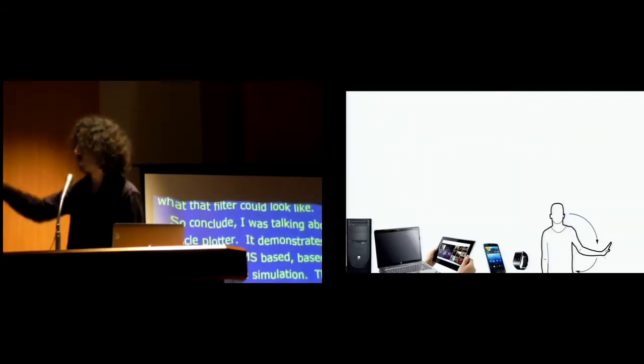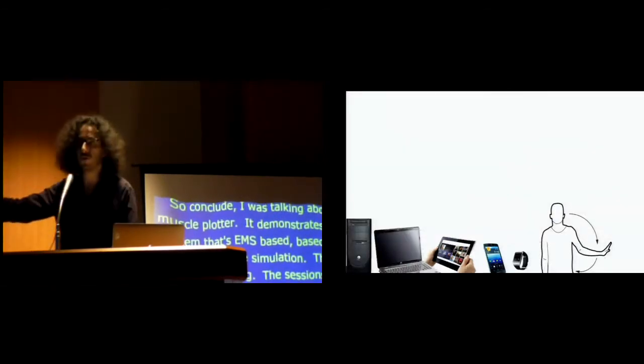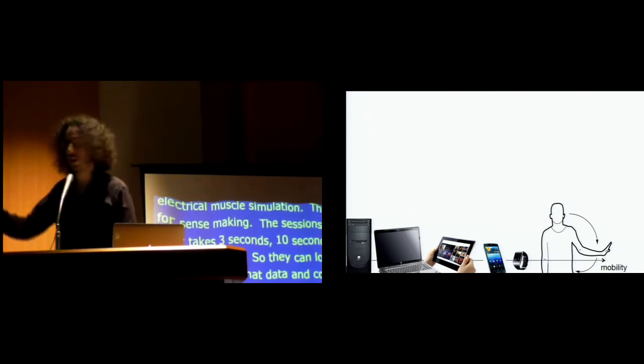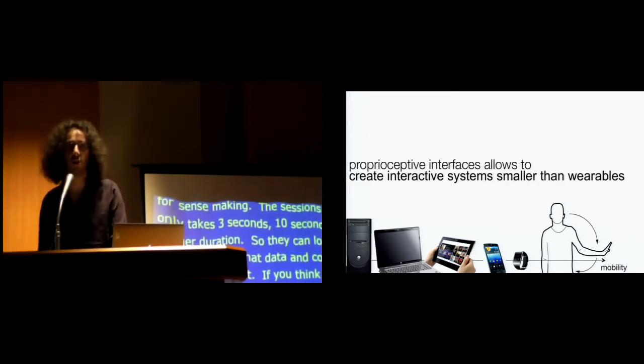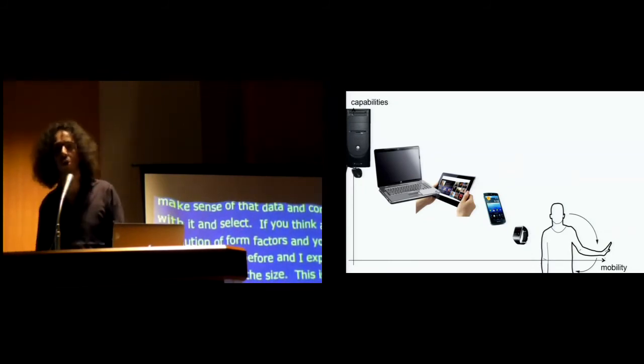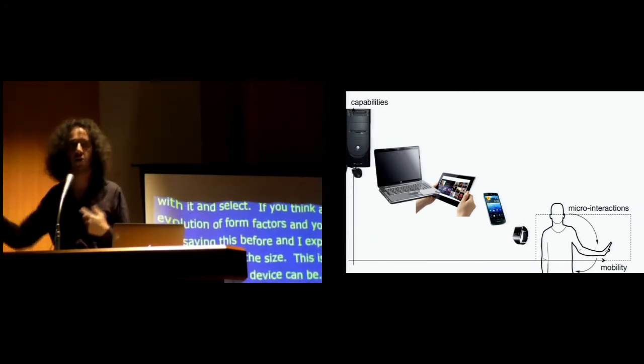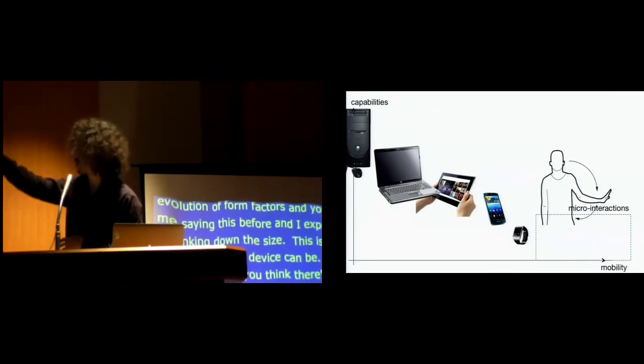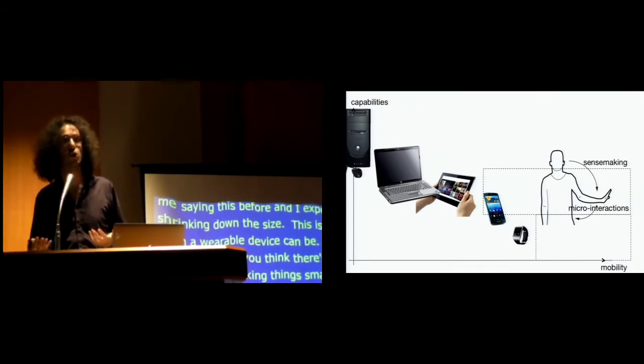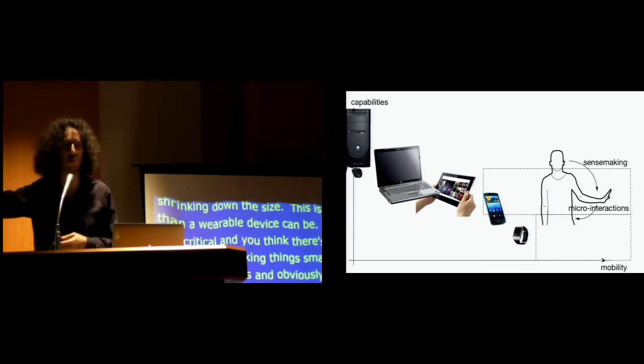This is a very simple RC circuit, and what we get out is a sort of very interactive tryout of how that filter could look like. All right, so to conclude, I was talking today about Muscle Plotter. It demonstrates a system that is EMS-based, so based on electrical muscle simulation. But the key feature here is that this system allows for sense making. The sessions here don't take 3 seconds, 10 seconds. They take longer durations because the trace of the output is persistent using a pen, so the user can look and make sense of that data and can play with it, can select it, can do a bunch of things. If you think about evolution of form factors, and you've heard me saying this before, and I kind of expect that shrinking down the size will give you these proprioceptive interfaces, interfaces that use your body for both input and output, are obviously smaller than a wearable device can be.